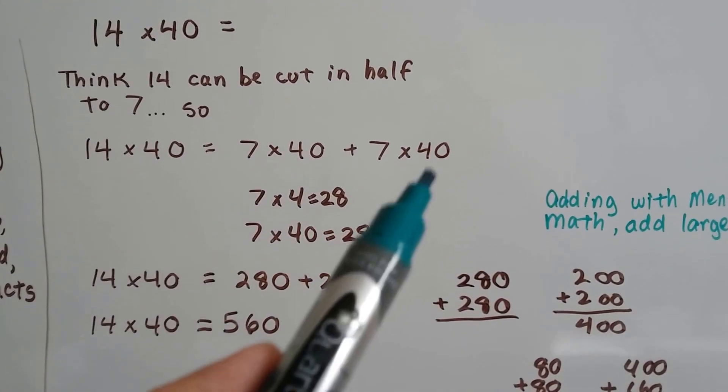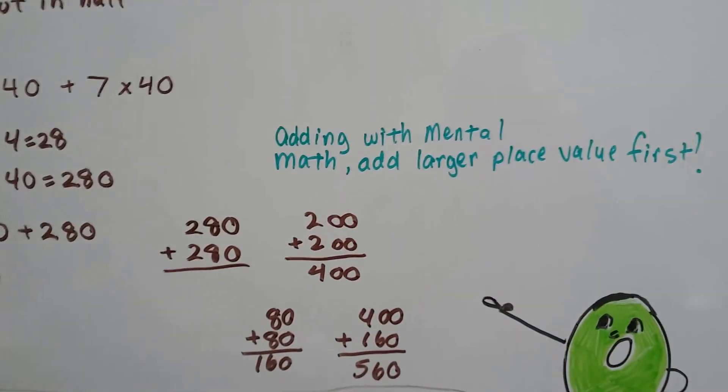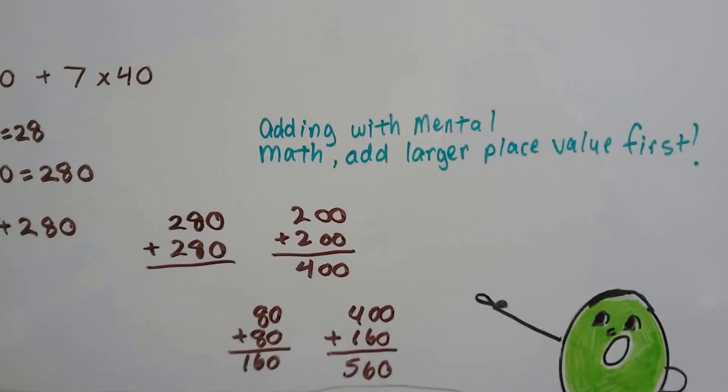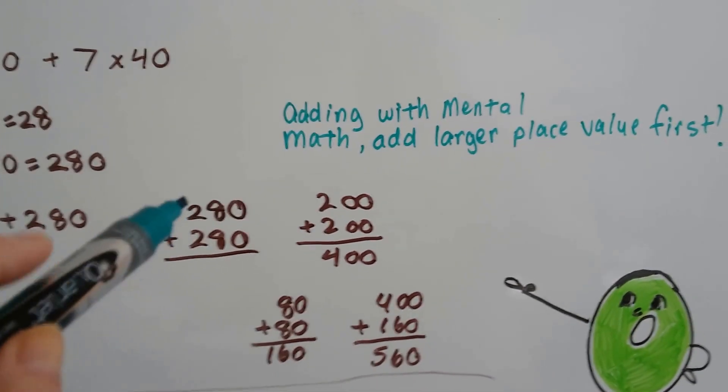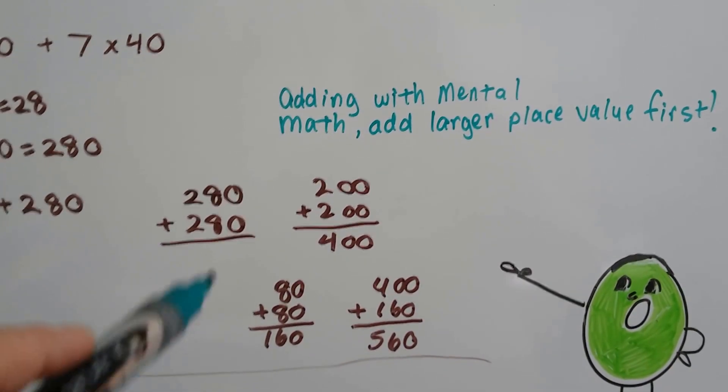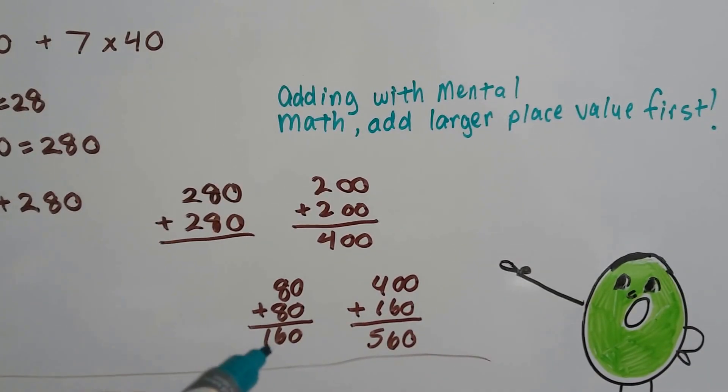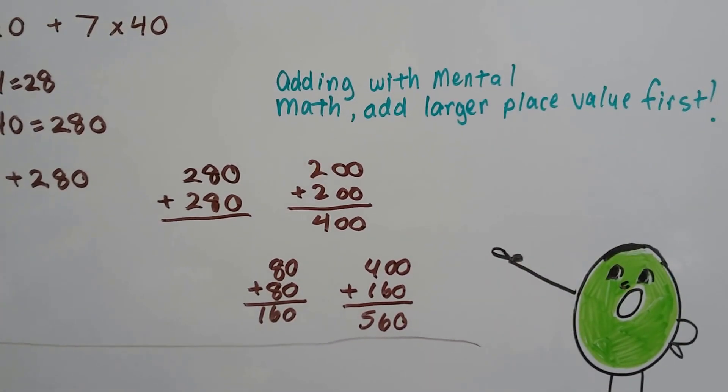All we have to do is 280 plus 280, and we can do that in our head. When adding with mental math, we add the larger place value first. Instead of starting with the ones, we start with the hundreds. We add 200 plus 200, that's 400. Then we add 80 plus 80, which is 160, and we add 400 to 160 to get 560.